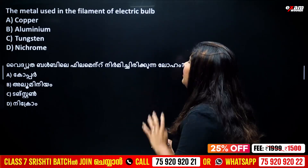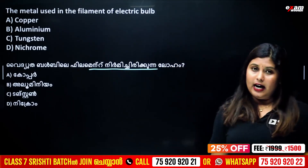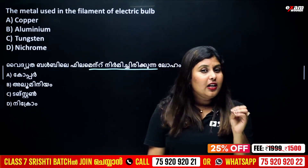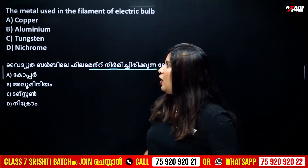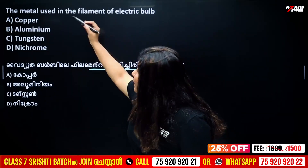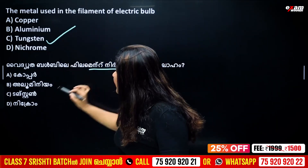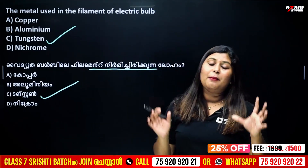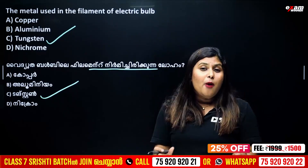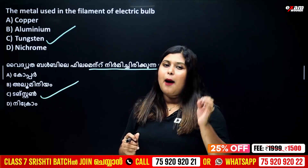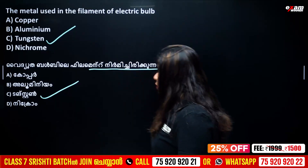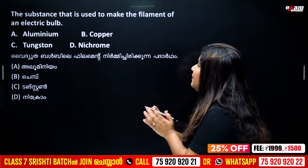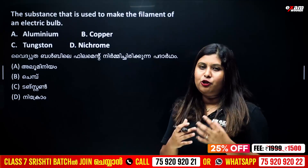Let's look at the electric bulb. I will answer questions about this. How do you think about Tungsten? We have a bulb invented by Thomas Alva Edison. He is a scientist. What do you think about Tungsten? The substance used to make the filament — that is the answer.